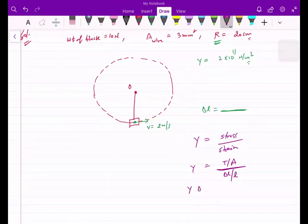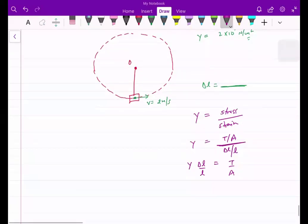So Y equals delta L over L times T by A. We have to find delta L.